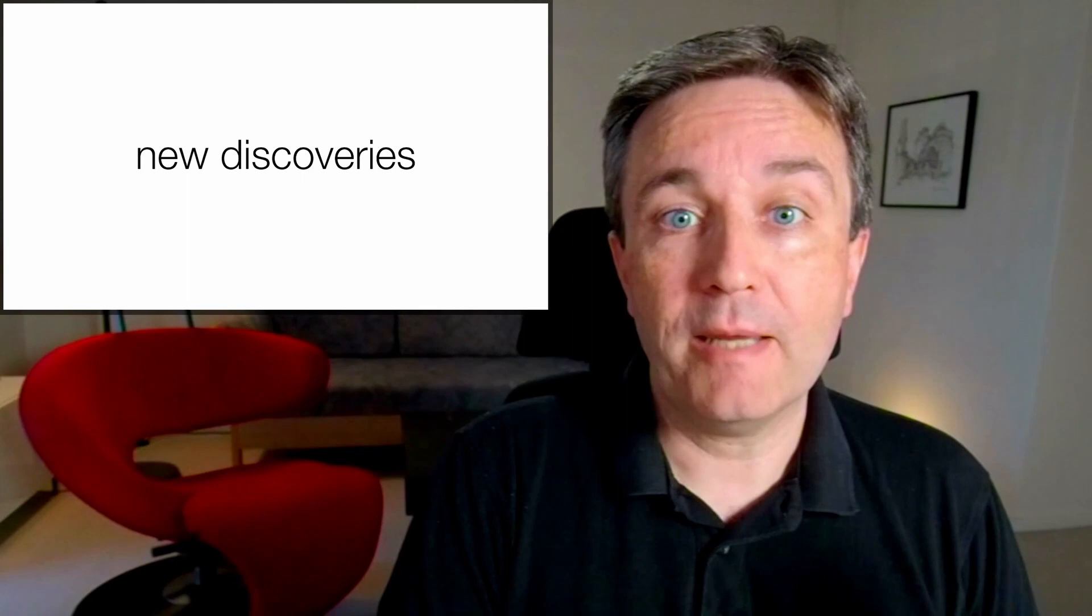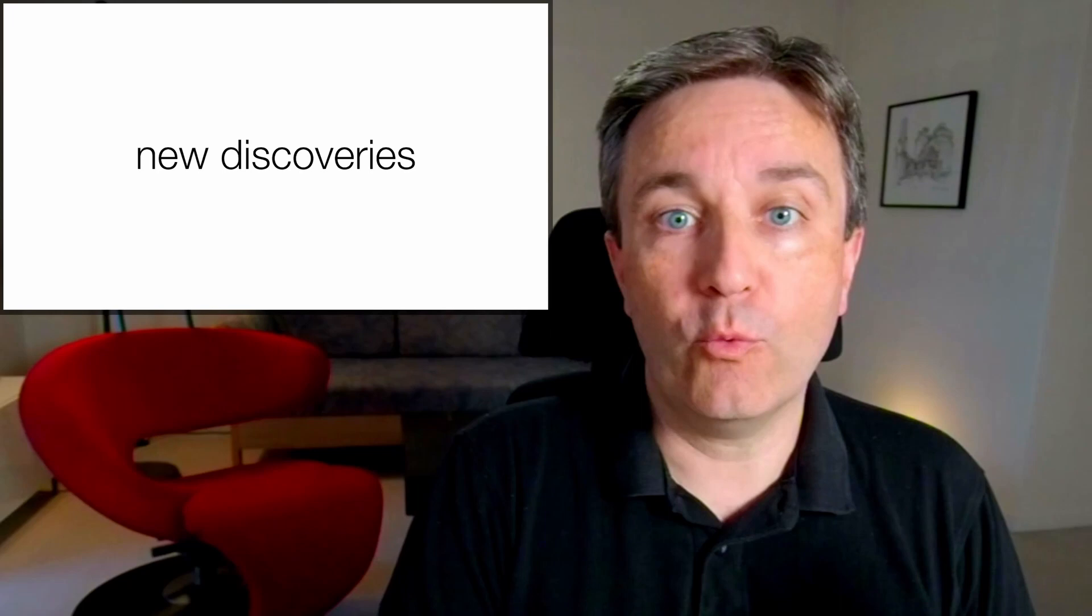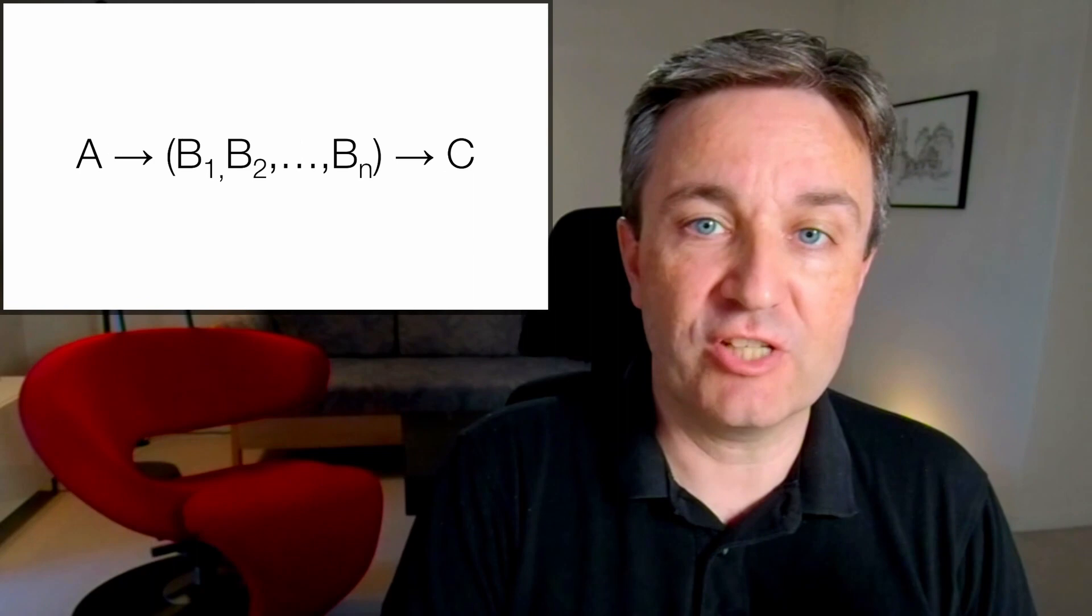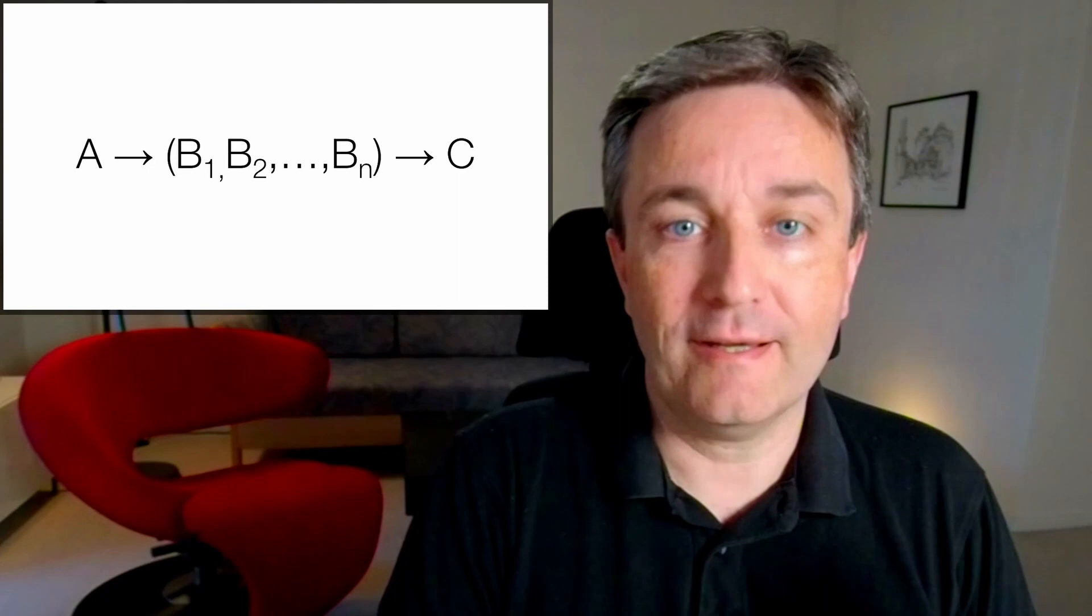As you can probably imagine, there doesn't have to be only one path. One could look for multiple indirect links linking A and C. That is, A might be linked to both B1, B2, and so on, all of which are linked to C. And having multiple such links would obviously strengthen the association.